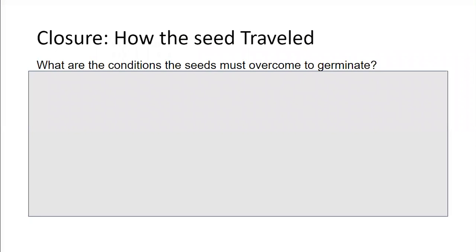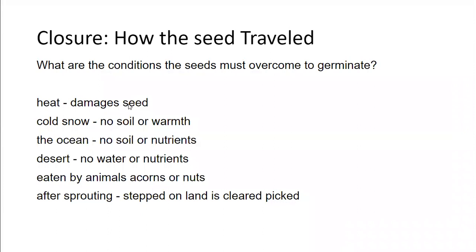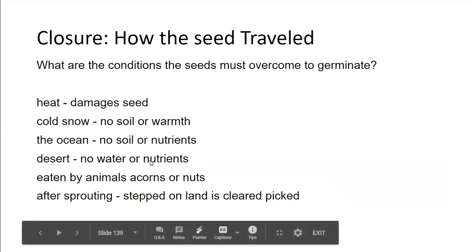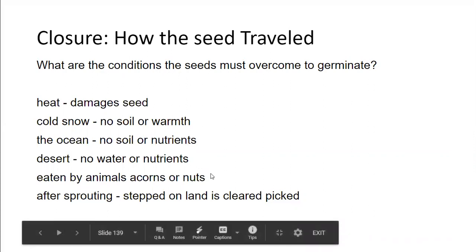Now, how do seeds travel, and what conditions must a seed overcome to germinate? There are many obstacles: heat can damage the seed; cold snow means there's no soil or warmth; the ocean provides no soil or nutrients; the desert has no water or nutrients. All of these conditions make it hard for seeds to germinate and grow. Seeds could also be eaten by animals, like acorns or nuts.